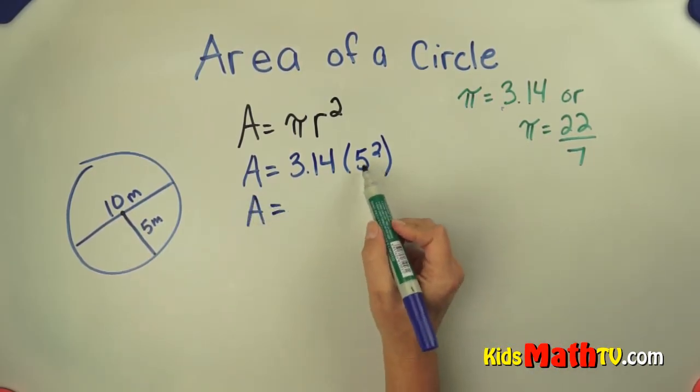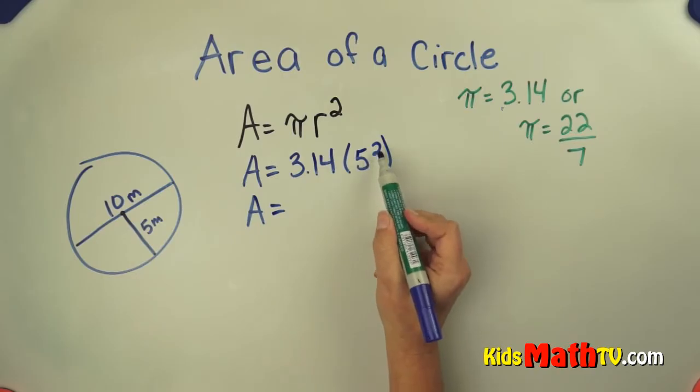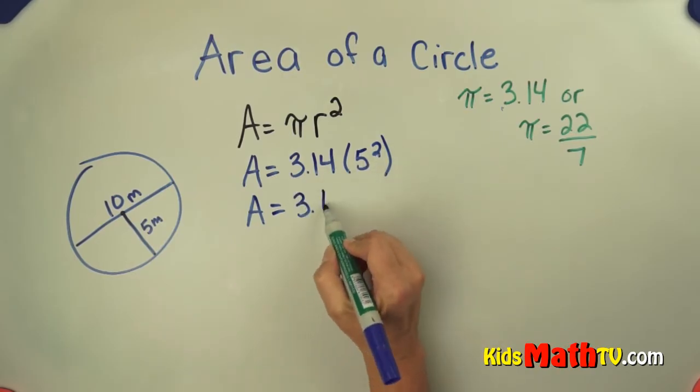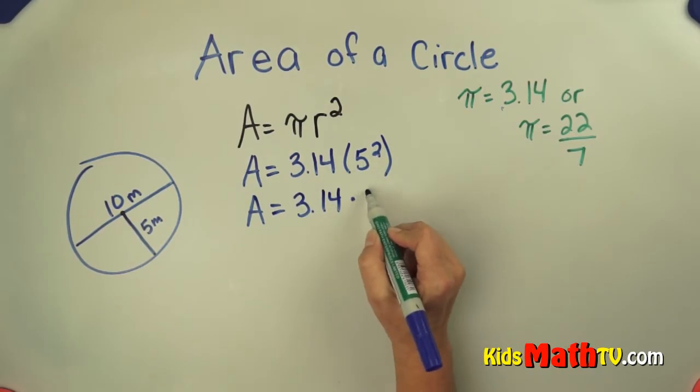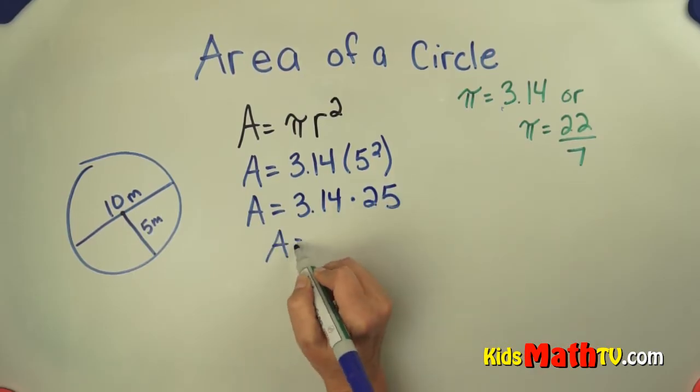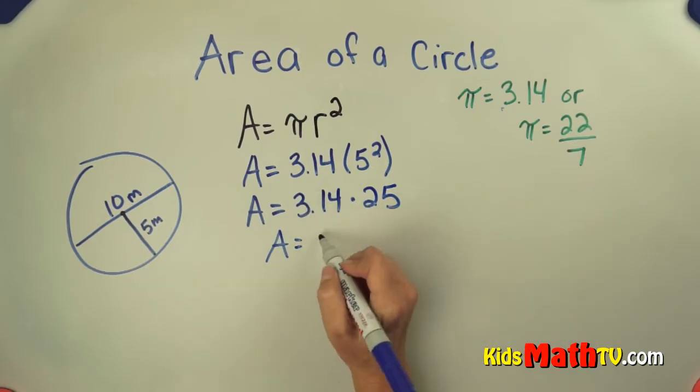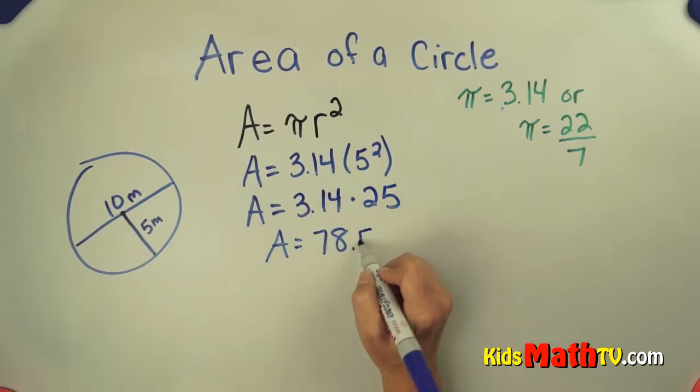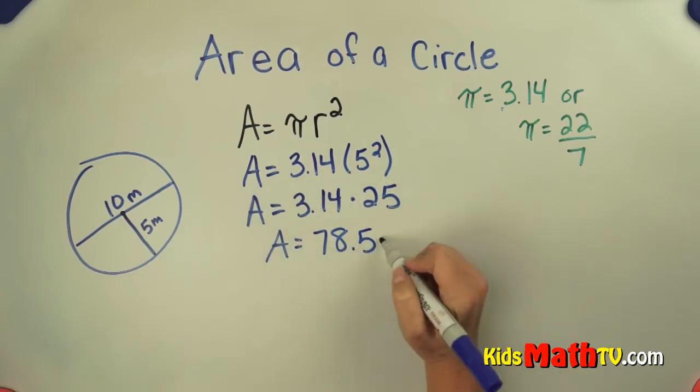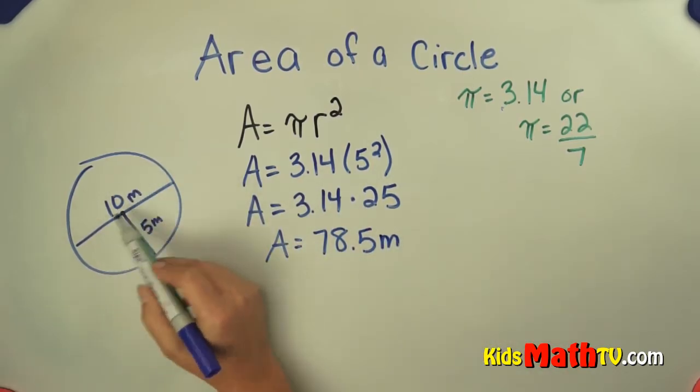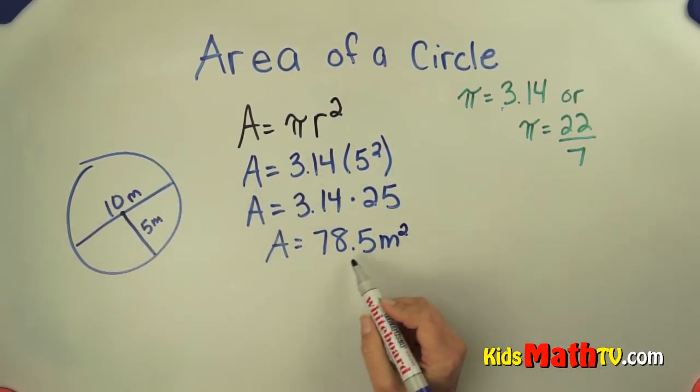So I have to do my exponent first. 5 times 5 is 25, so 3.14 times 25. And when we do 3.14 times 25 it comes out as 78 and 5 tenths. And this is meters, and it's square meters so I have to say meters squared.